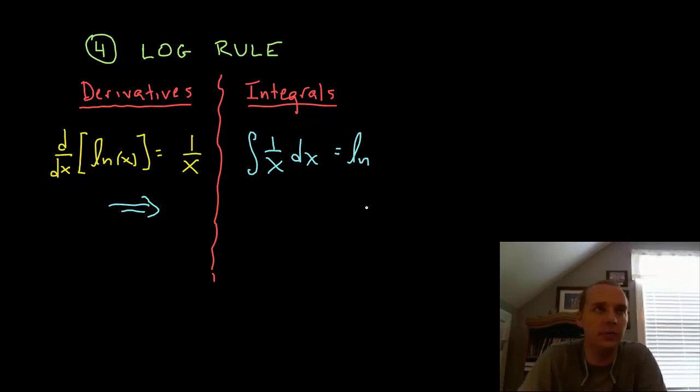Now one small detail that is important: the domain for the log function is only positive values, where the 1 over x function is defined for all x's other than 0. So to combat this discrepancy when we integrate the natural log function will have an absolute value of x. It's a small detail but an important detail. What that absolute value does is it allows you to even plug in negative values and the natural log function would still be able to be defined there having those absolute values.